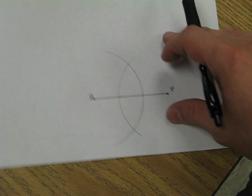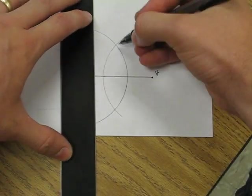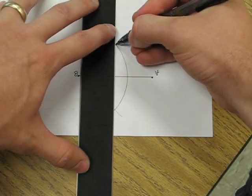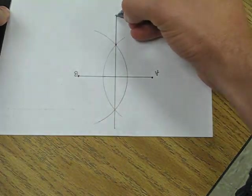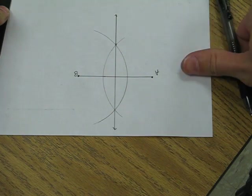Now we can use our straight edge to connect these crossing points with a line. And this line will be the perpendicular bisector of the segment.